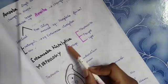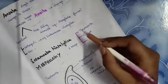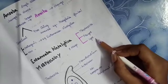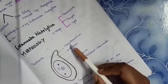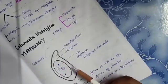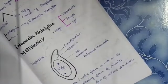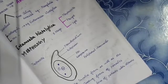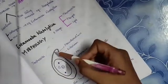Entamoeba histolytica, its morphology: it has three main stages. First is trophozoid, second is pre-cyst form, and the third is cyst form. Trophozoid has these components: pseudopodium, ectoplasm, and the center one is nucleus. The trophozoid stage is considered as an invasive, feeding, and replicating form.